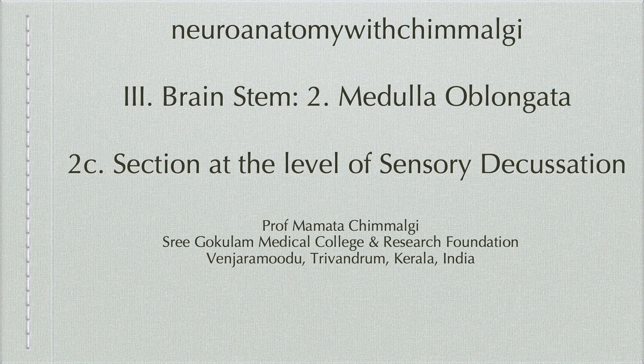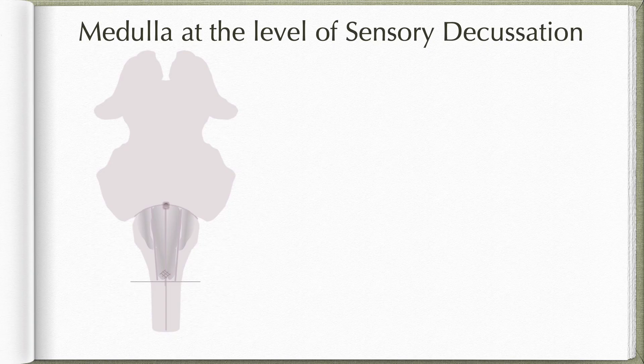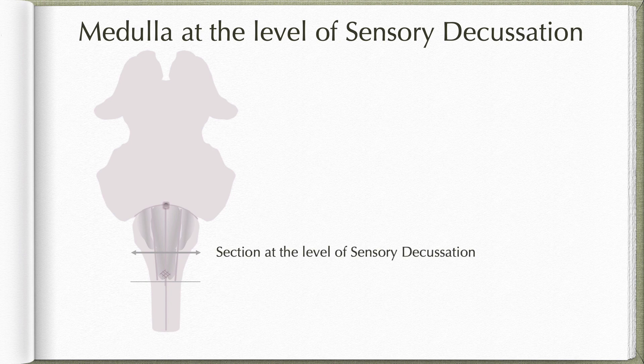In this video, let us learn about the internal features of the medulla oblongata at the level of sensory decussation. After crossing, the dorsal column pathways will form the medial lemniscus, so the decussation is also known as lemniscal decussation. To study the internal features of the medulla at this level, the medulla is sectioned at the level shown here.